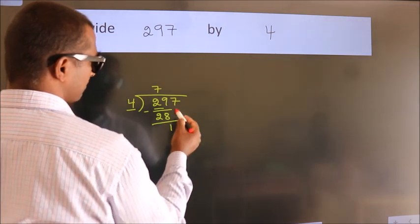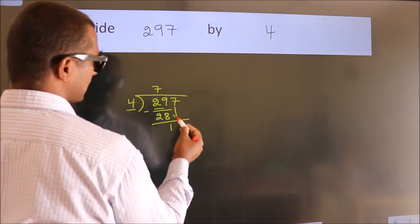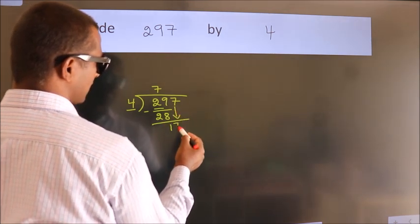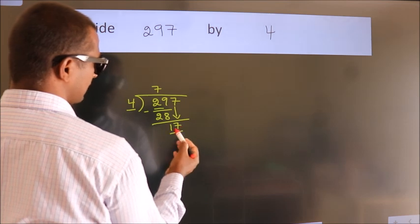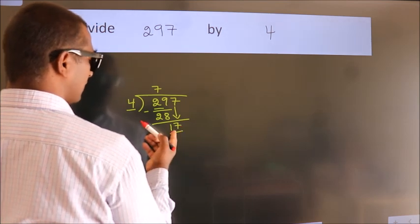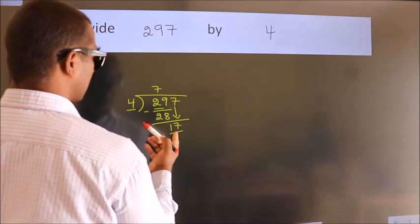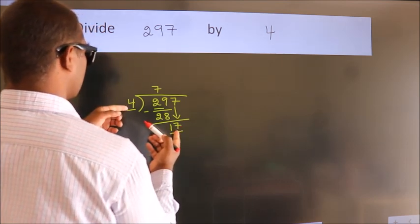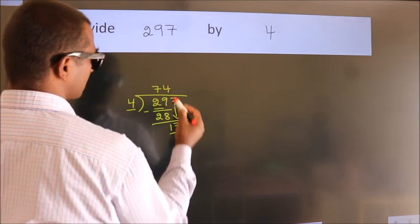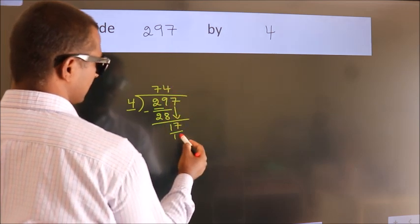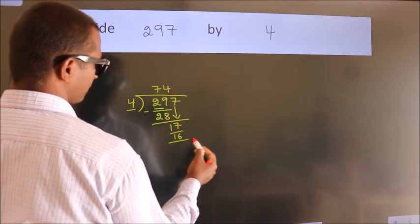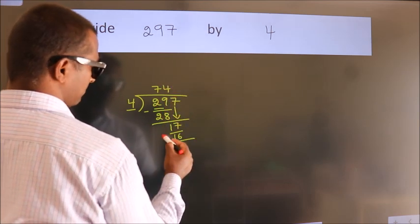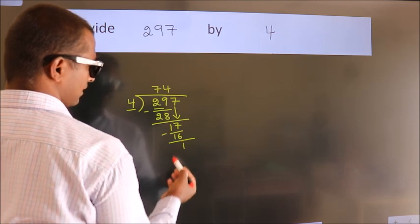After this, bring down the beside number. So 7 comes down, giving us 17. A number close to 17 in the 4 times table is 4 fours, 16. Now we subtract and we get 1.